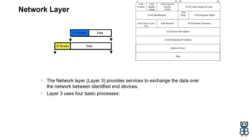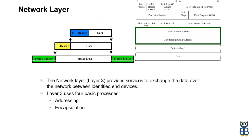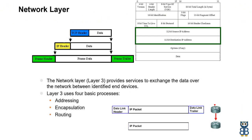The network layer has 4 basic processes to perform: IP Addressing, Encapsulation, Routing, and Decapsulation.